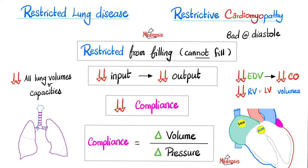In restrictive lung disease, the air coming to the lung is decreased, the air leaving the lung is decreased, and all the lung volumes and capacities are decreased. If there is less input, there is less output. So tidal volume: low. Inspiratory capacity: low.